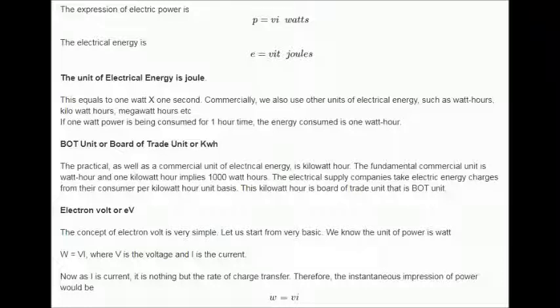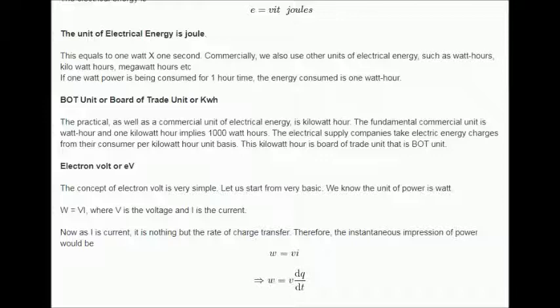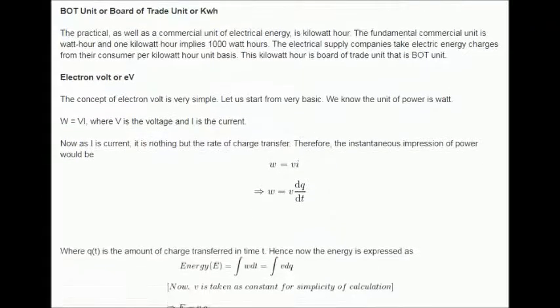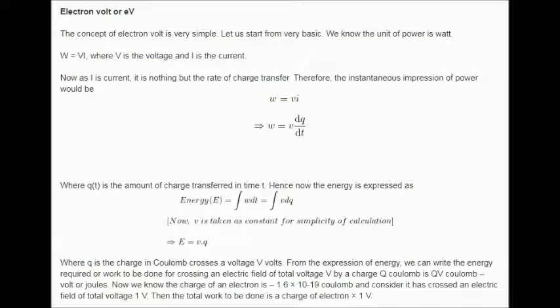We know the unit of power is watt. W equals VI, where V is the voltage and I is the current. Now as I is current, it is nothing but the rate of charge transfer. Therefore, the instantaneous impression of power would be as follows, where Q is the amount of charge transferred in time t. Hence now the energy is expressed as below.